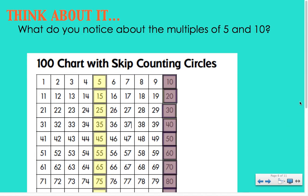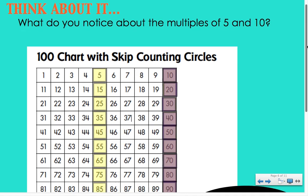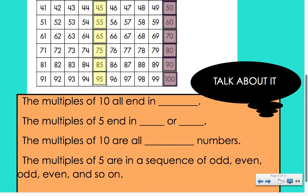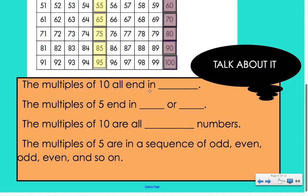Good job! Now that you have your twos, fives, and tens all colored in, take a minute to talk to your partner about some patterns you might be seeing. Look at them and discuss: What do the multiples of ten all end in? What do the multiples of five end in? What kind of numbers are the multiples of ten? And what kind of sequence are the multiples of five in? Take a couple of minutes to talk with your partner, and if you notice other patterns, discuss those as well. Go ahead and pause while discussing, and when ready come back and push play.